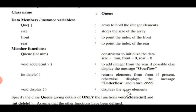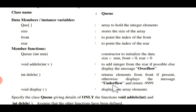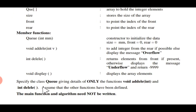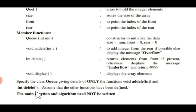Addition is only possible when there is space in the queue, meaning no overflow. After that, int deleteEle() returns an element from the front if present, otherwise displays the message underflow and returns -9999. If you want to delete something, one or more elements must be present. Then we have void display(), which displays the array elements. The question asks us to specify the class Q with details of only addEle(int) and deleteEle() — the other functions are assumed to be defined.